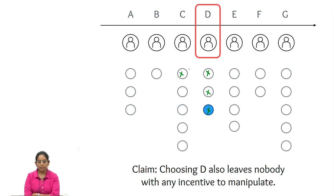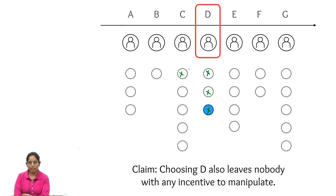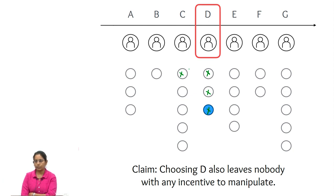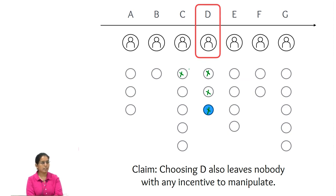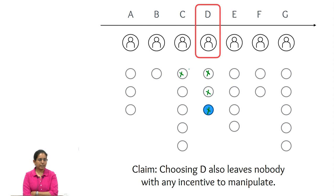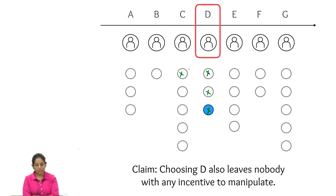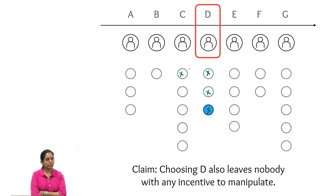If no voter changes the candidate at their top position, the output of the mechanism will not change. The mechanism builds the histogram from top positions, so the histogram stays the same. Therefore, if you want to influence the outcome, you must change your peak — otherwise you cannot affect the outcome of the median candidate mechanism.